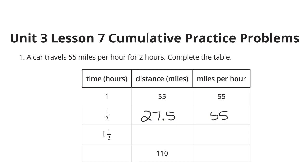Now, 1 and a half hours, if you take the 55 and multiply by 1 and a half, you get 82.5. And if I were to take that 82.5 and divide it by the 1.5, we would get 55 miles per hour, because equivalent ratios have to have the same unit rates. Then, 110 miles. Well, I know it's going to be 55 miles per hour here, because equivalent ratios have to have the same unit rates.